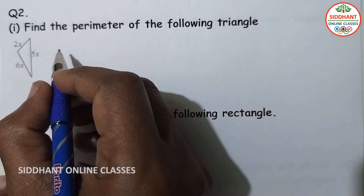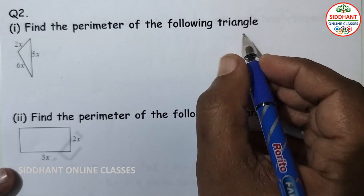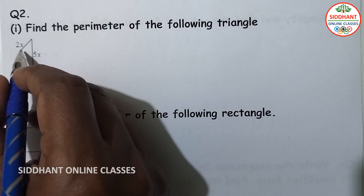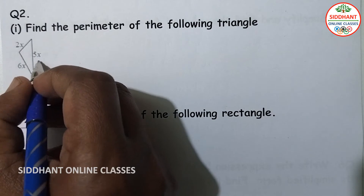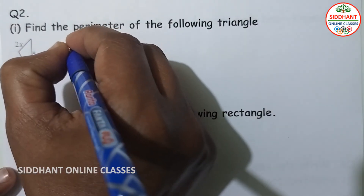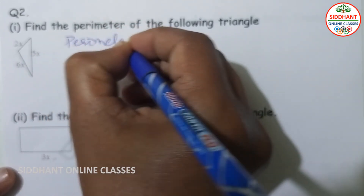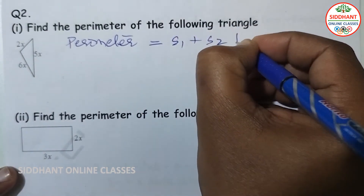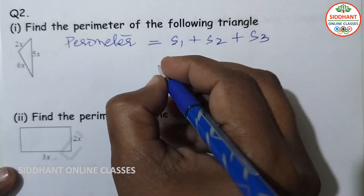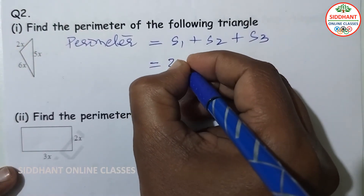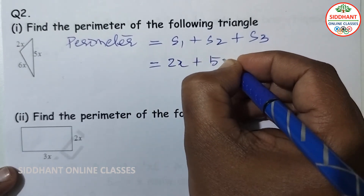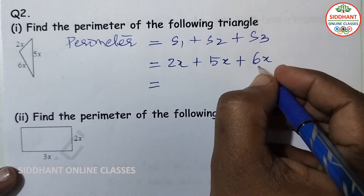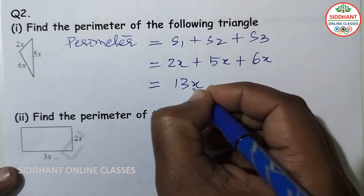Question number two, first part: find the perimeter of the following triangle. The dimensions given are 6X, 2X, and 5X. The perimeter of a triangle is the sum of all sides: side 1 plus side 2 plus side 3. So 2X plus 5X plus 6X gives us 13X. That is the perimeter.